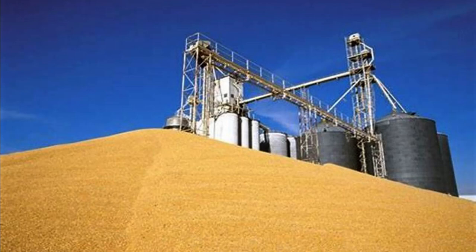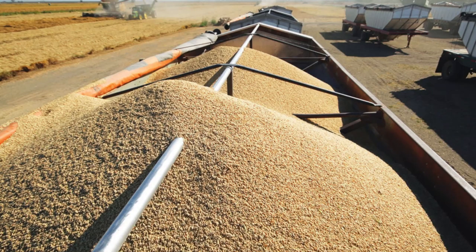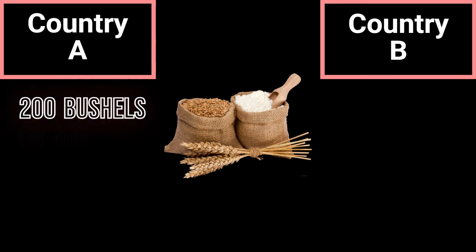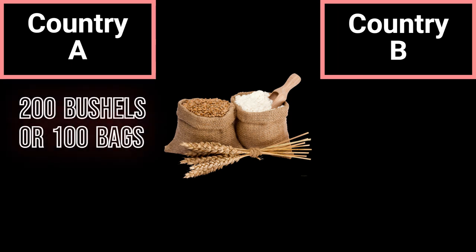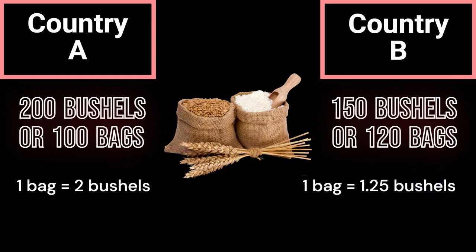Let's now look at comparative advantage. Comparative advantage refers to a situation where a country can produce a good or service at a lower opportunity cost than another country. Opportunity cost is the value of the next best alternative foregone when choosing one option over another. A country with a comparative advantage has a lower opportunity cost of producing a specific good or service compared to another country. For example, let's consider the same two countries, country A and country B, but now they are producing both wheat and rice. In one hour, country A can produce 200 bushels of wheat or 100 bags of rice. In the same hour, country B can produce 150 bushels of wheat or 120 bags of rice. The opportunity cost of producing one bag of rice in country A is 2 bushels of wheat (100 bags of rice divided by 200 bushels of wheat), while in country B it is 1.25 bushels of wheat (120 bags of rice divided by 150 bushels of wheat).